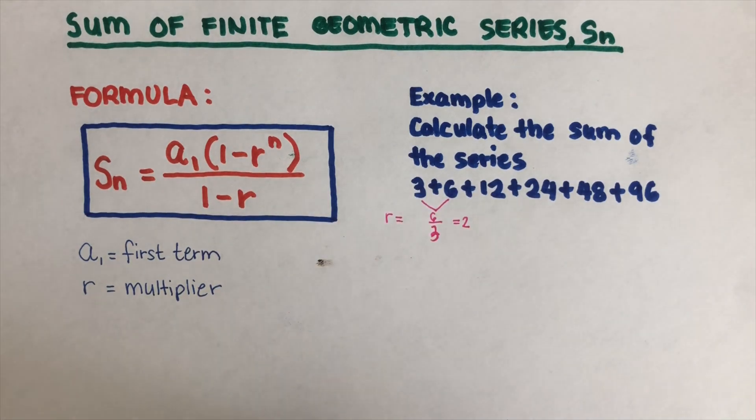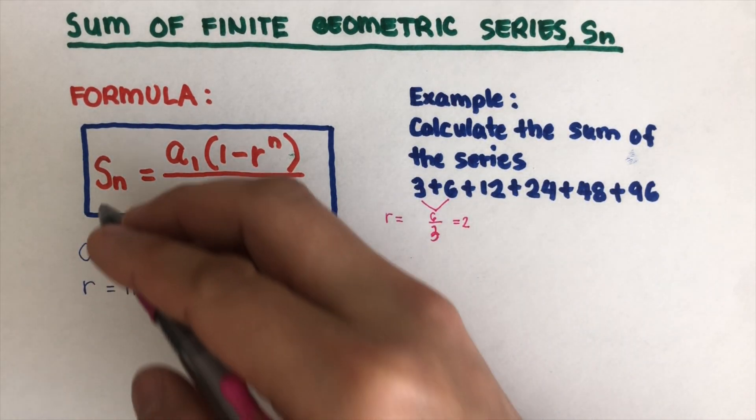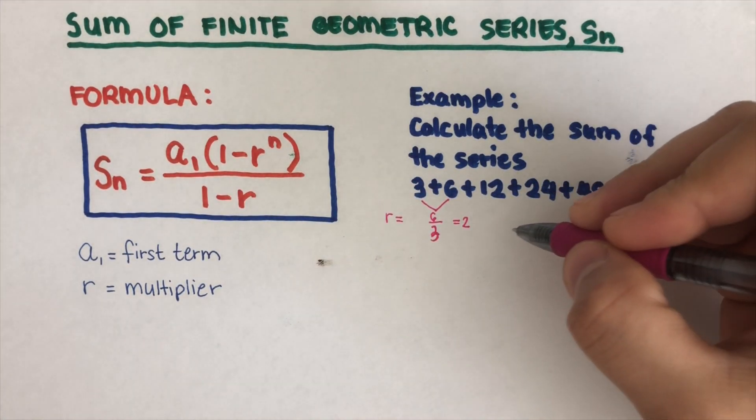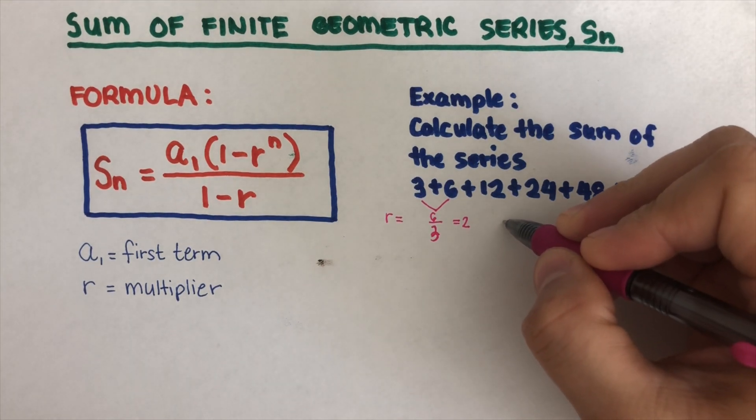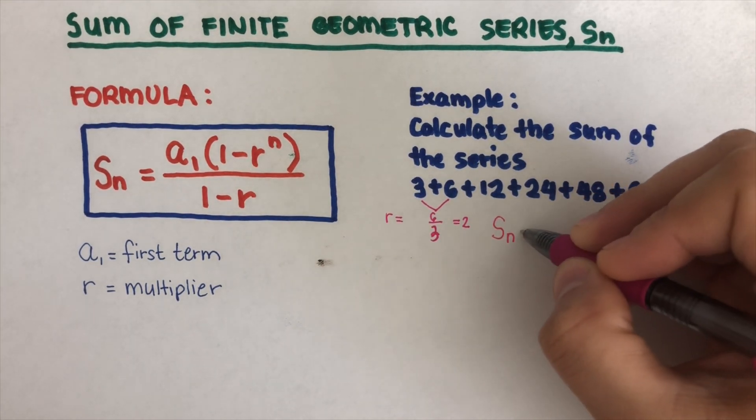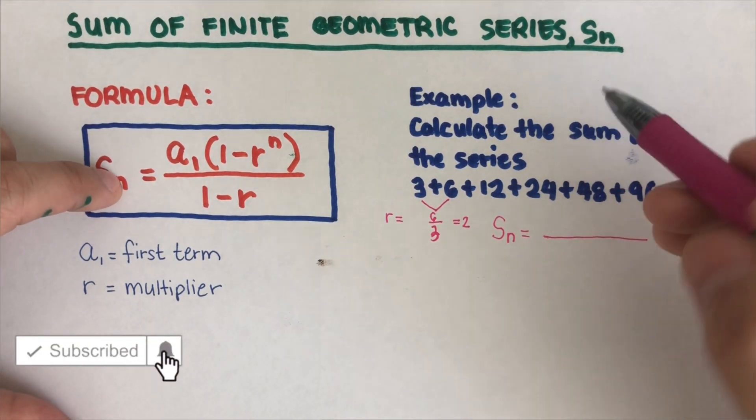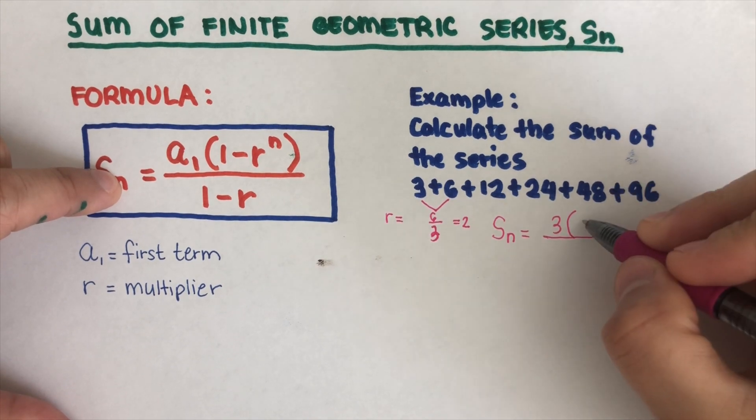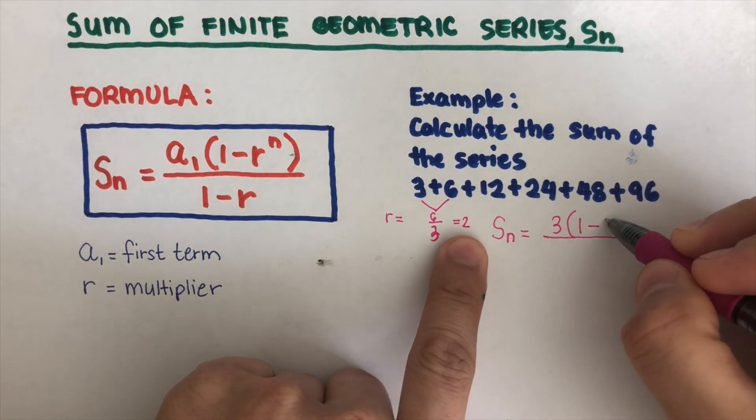Multiplier is the number that we multiply each time. So we're now ready to put these values into the formula. So that would be, I'm just going to write it over here. So S of n is equal to our first term is 3 times parentheses 1 minus the multiplier is 2.